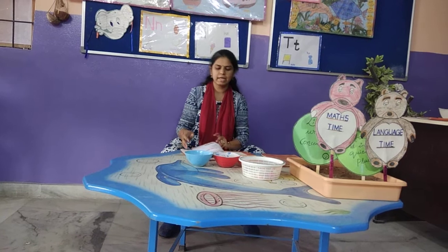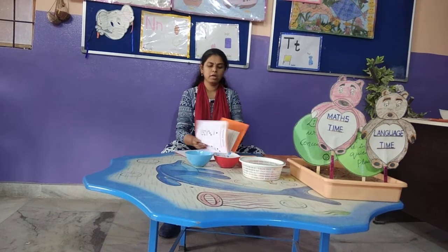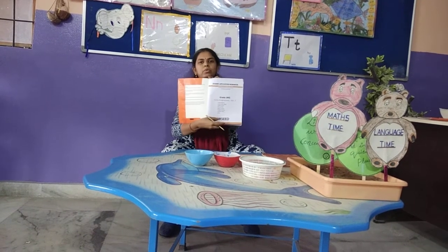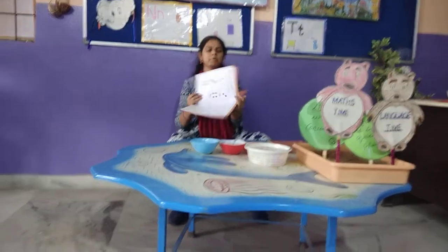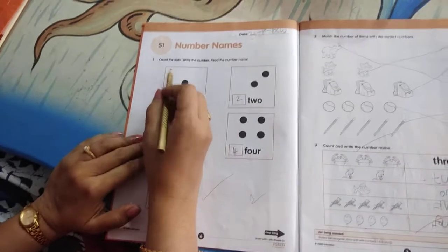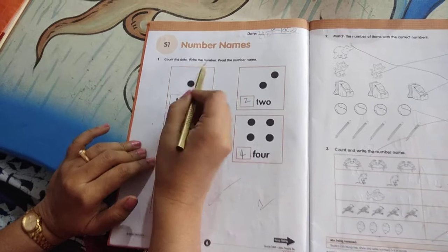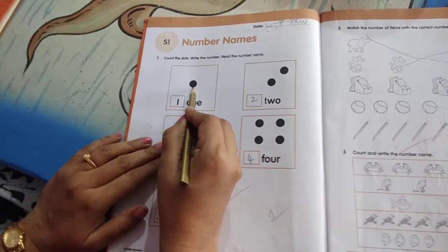For understanding this, open your Volume 2 workbook, children. Phase number 6, S1. Count the dots and write the number.